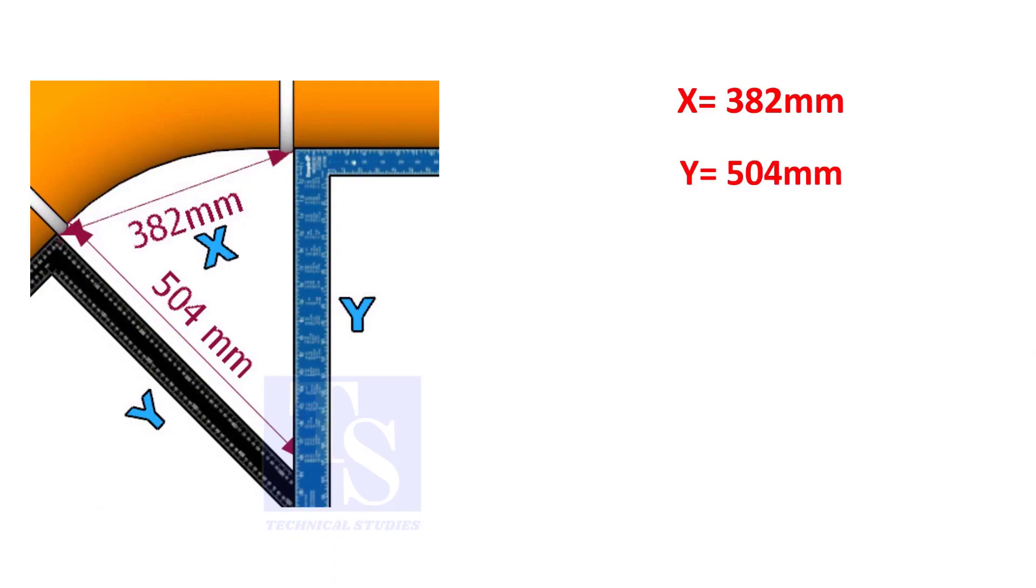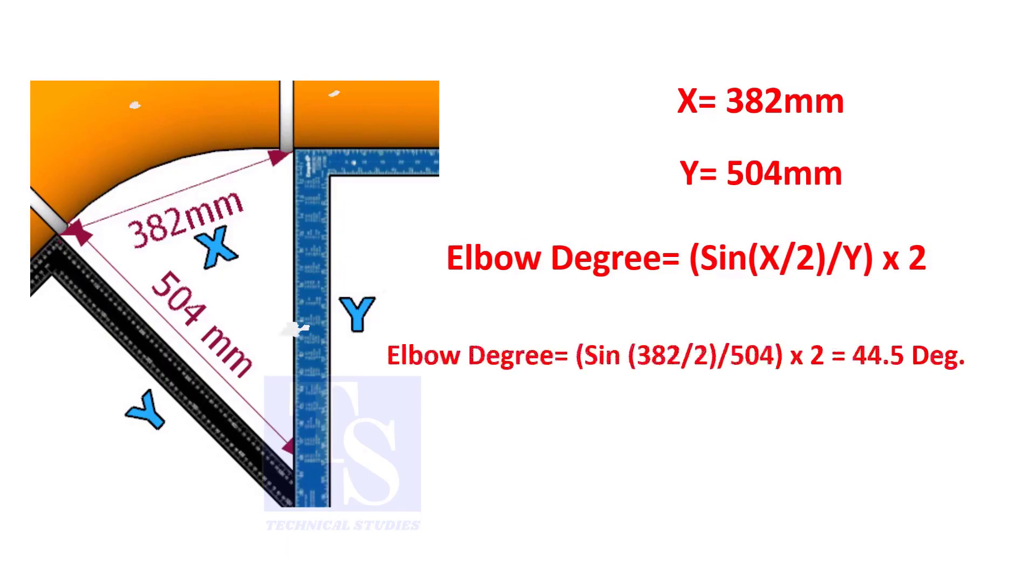Assume that the value of x is 382 and the value of y is 504. Divide the half value of 382 by 504 and convert the value to sine. Then multiply by 2.